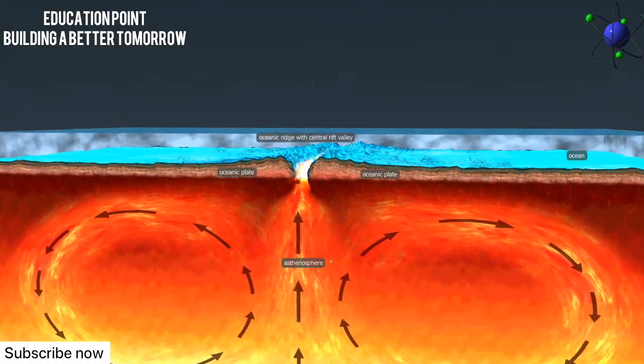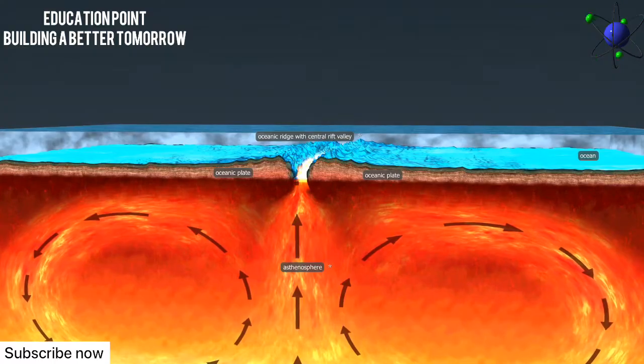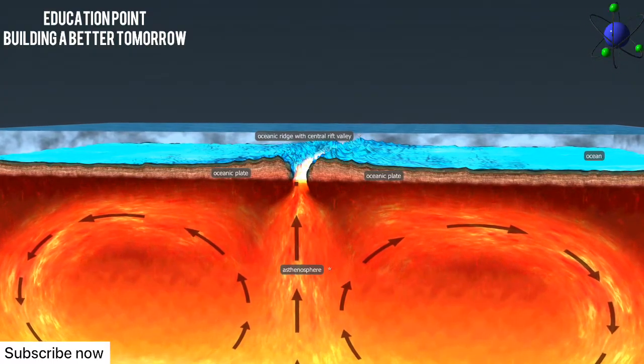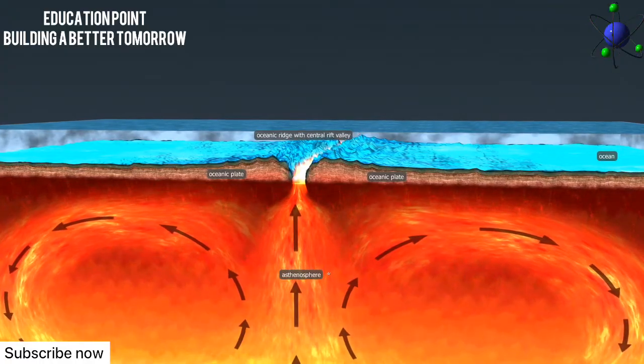The theory that describes the motion of the lithosphere is called plate tectonics. There are three types of tectonic movement: convergence, divergence, and subduction.